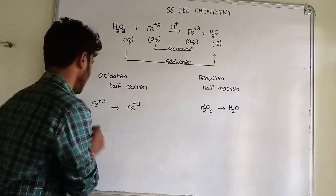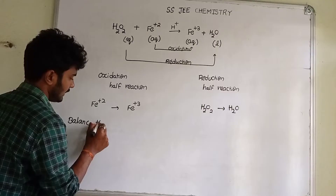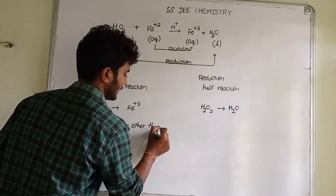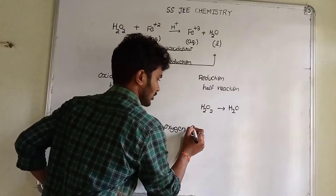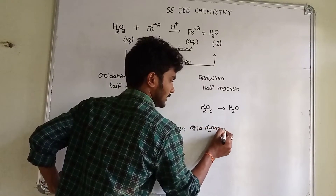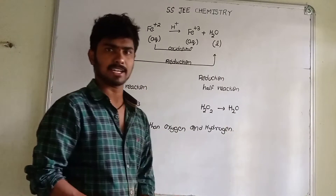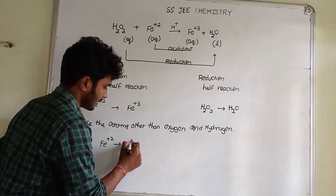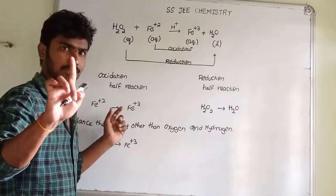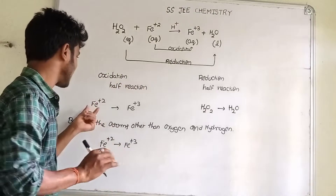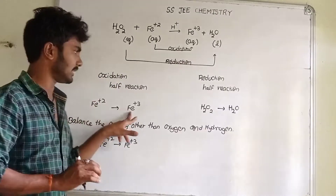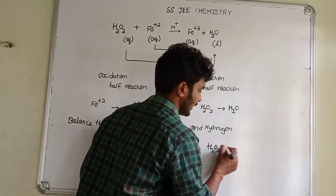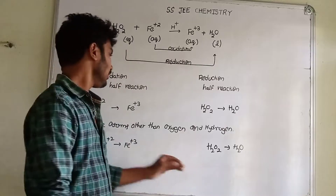Next step is to balance the atoms other than oxygen and hydrogen — that means the remaining atoms. For this, the atom is Fe²⁺ and Fe³⁺, and we can re-balance the atoms.